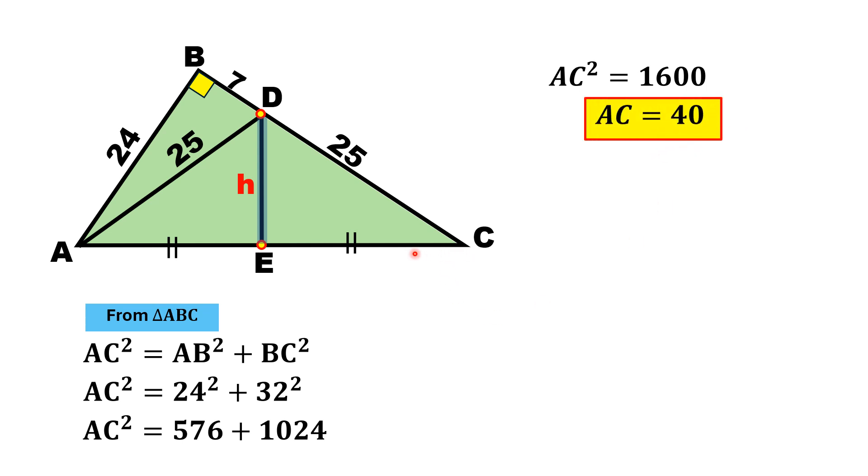Now this whole length is 40 units, and it is given that these two lengths are equal to each other, meaning each length is half of AC. Since AC is 40, AE = EC = 20 units each.